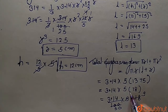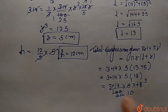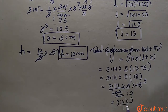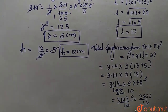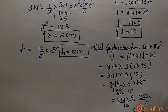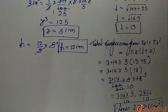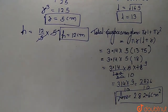Simplifying: 314 multiplied with 9 upon 10 equals 2826 upon 10, which gives 282.6 centimeter squared. So 282.6 cm² is the total surface area of the given cone.